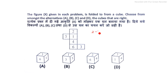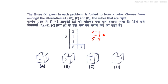So we identify the opposite pairs: for two, the opposite is four; for one, the opposite is six; and for five, the opposite is three. Since opposite faces can never be adjacent to each other, we use this rule to eliminate wrong answer options.